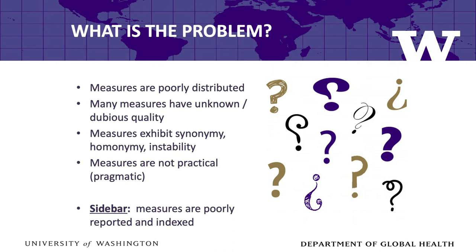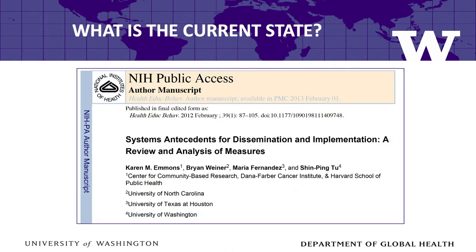Fourth, many measures are not practical. Implementation scientists have not prioritized practicality in measurement, and as a result our measures are often too long and too complicated for practitioners to use. Finally, as a sidebar, the psychometric properties of our measures are often poorly reported in peer-reviewed articles, and the measures themselves are hard to find because they are not well-indexed in bibliographic databases like PubMed. This makes it hard to find the reliable, valid, pragmatic measures that do exist. Those are some pretty bold claims, so let me bring the receipts.